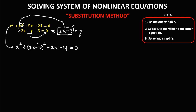We need to expand this equation. Using SMS: S — square of the first term, so the square of 2x is 4x squared. M — multiplication, so 2 times negative 3 is negative 6, times 2x gives negative 12x. S — square of the second term, so the square of 3 is 9. Then bring down negative 5x and negative 21 equals 0.